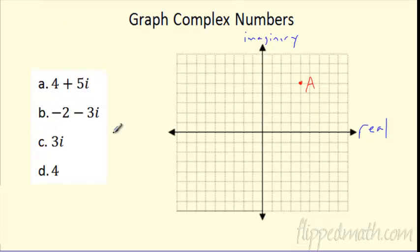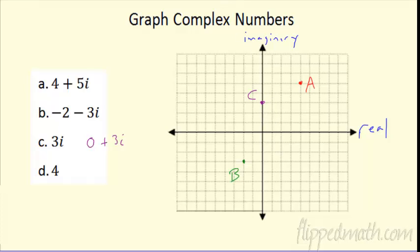Can you do point B? Sure. This is negative 2 in the real direction and then negative 3 in the imaginary direction — that gives me point B. What about just 3i? That's the same as 0 plus 3i — it's 0 part real, all imaginary — it's going to end up on the imaginary axis. And 4 is just all real, on the real axis with nothing imaginary. Really, everything is complex — either all real, all imaginary, or both.